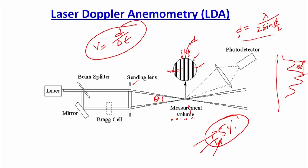For gas-solid flows like bubbling fluidized beds, high solid fractions cause all light to refract or diffract, making measurement impossible. Post-processing is also an issue: if bubbles are used as seed particles and are too large, one bubble can cut multiple fringes simultaneously, complicating the data processing and introducing errors. These are the key disadvantages of LDA in multi-phase flow applications.